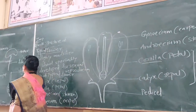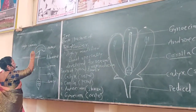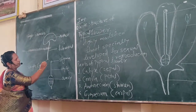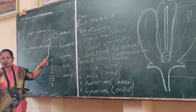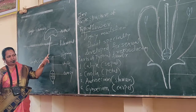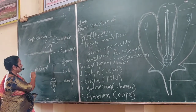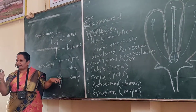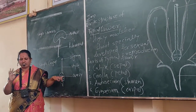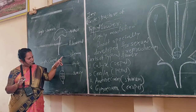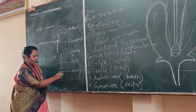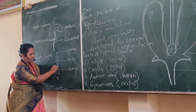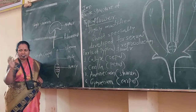A single stamen consists of an anther in which many pollen grains are produced, and a filament — a long narrow stalk attached to the inner part of the flower. A single carpel, when many carpels are present, that is called the polycarpellary condition. A single carpel consists of stigma, style, and ovule. From a single ovule, a single seed is produced, and from the ovary, fruit is produced.